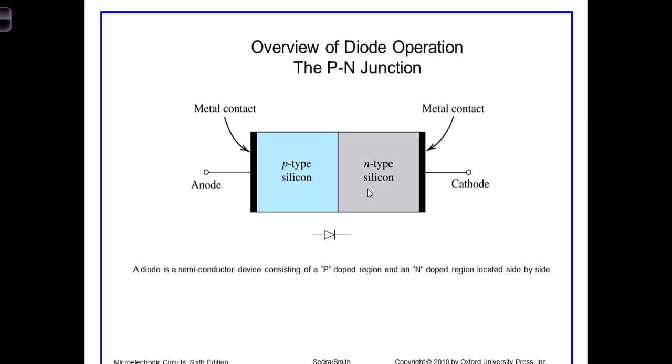A P-N junction exists anytime a P-doped area adjoins an N-doped area. We'll study the P-N junction functions from the perspective of diodes, which are the most basic P-N junction device.